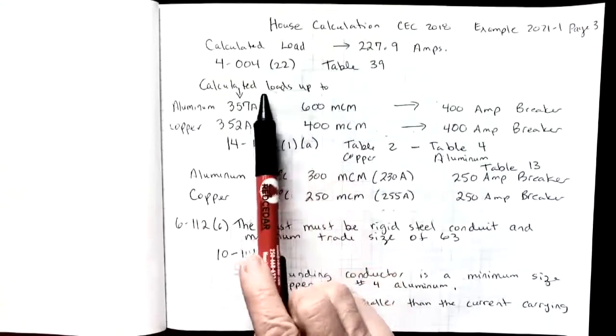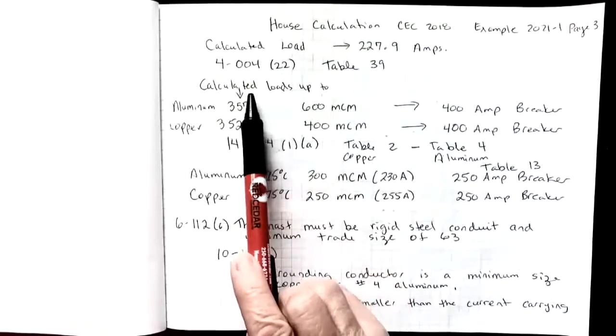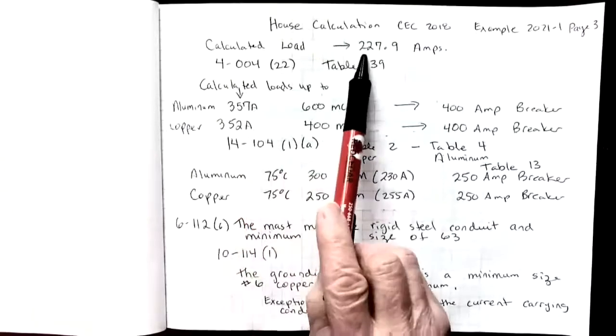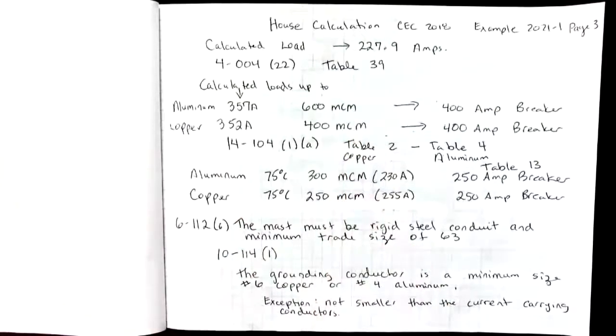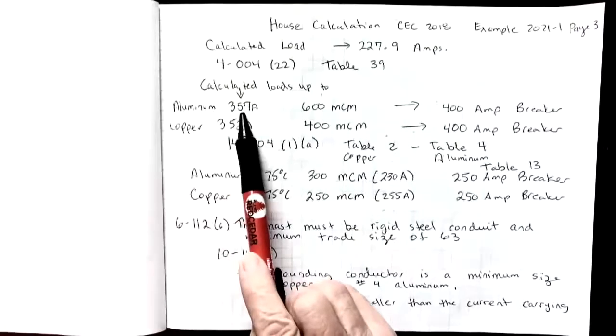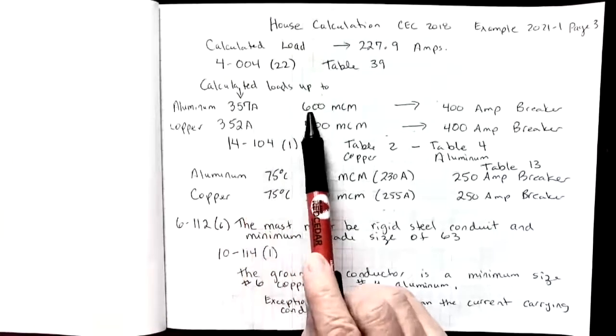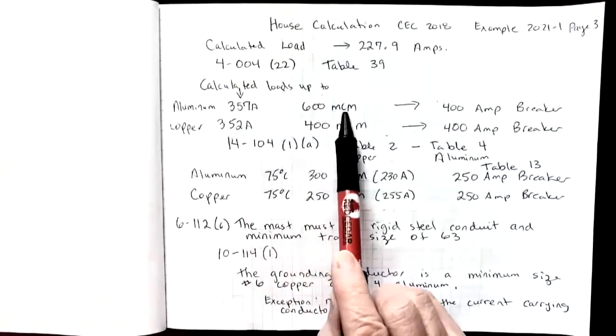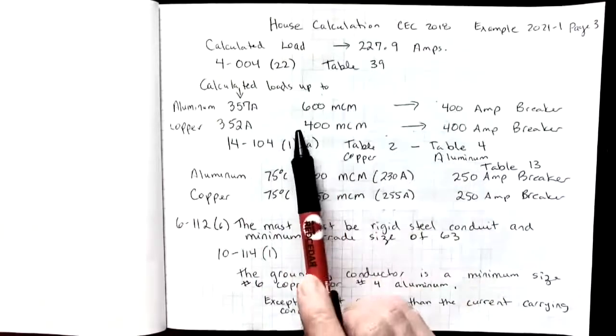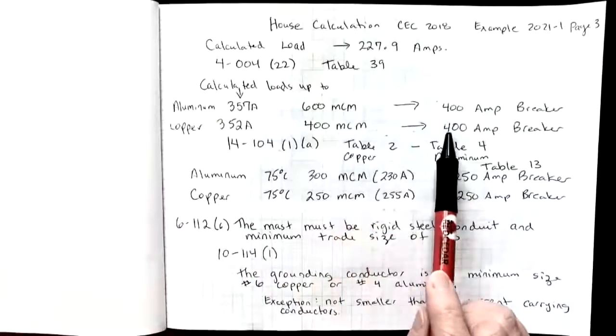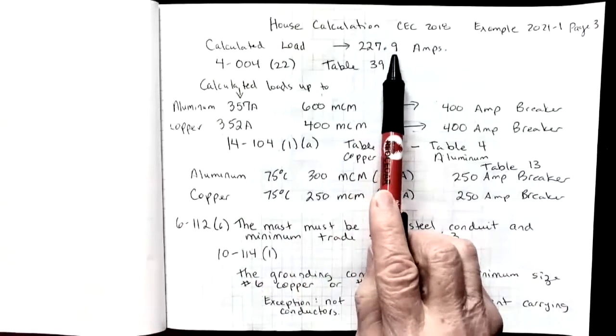In table 39, what they do is give you a calculated load column. So you look in that calculated load column for a number that's greater than your actual calculated load. For aluminum, I would have to go to 357. For copper, I'd have to go up to 352. That forces me to use a 600 MCM size aluminum wire and a 400 amp breaker or 400 MCM copper wire, still a 400 amp breaker. Now my load was only 227.9.